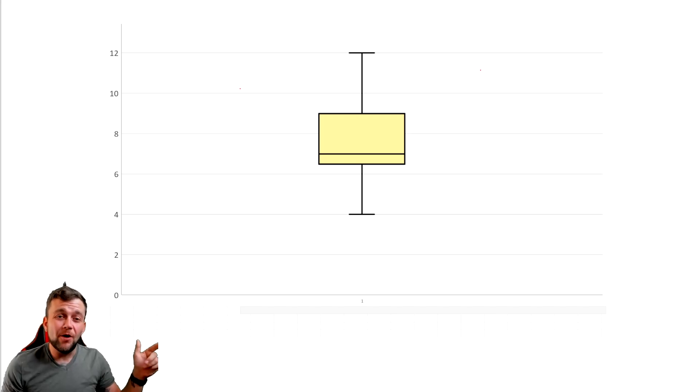As we continue to move down our box plot, remember, the next line down is going to be our median number, or our middle number of our data set. It looks like that line inside of the box is at the point of 7. So the median of our entire data set is 7.